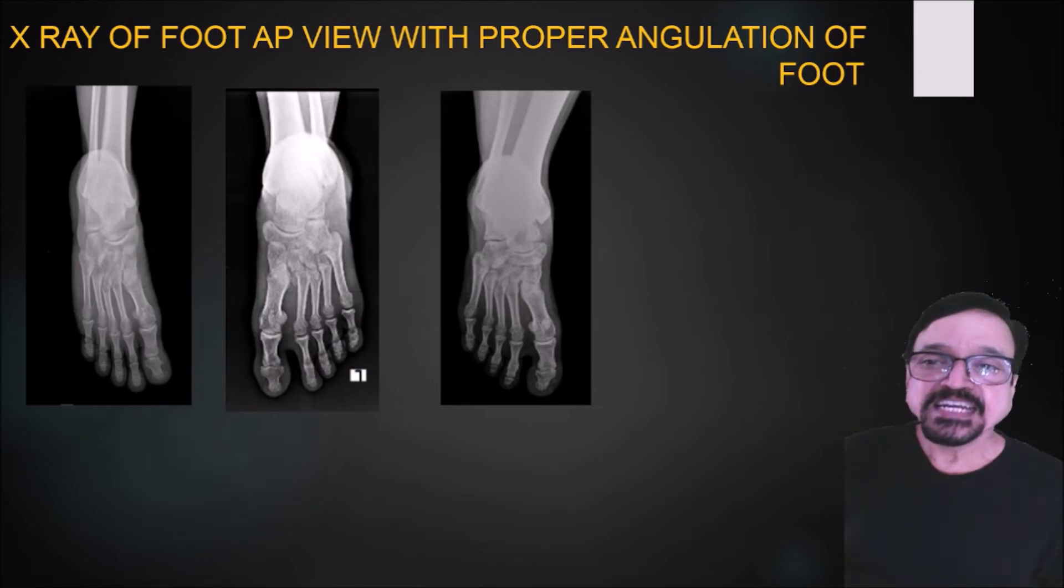If you see the first, it is perfectly positioned, a correct radiograph. If you see the second, now the angulation has gone slightly ahead, so you are getting slightly obscured base of the metatarsals. And in third also you are getting the same, it is because of this slight more angulation.